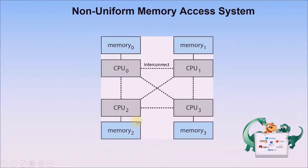In a non-uniform memory access (NUMA) system, one core can switch from one CPU to the next. For example, memory zero and memory one are present, and CPU two accesses memory in a non-uniform fashion.